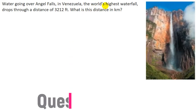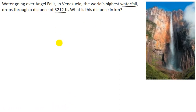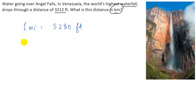In this question, they are saying that the world's highest waterfall drops through a distance of 3212 feet, and we have to find the distance in kilometers. You should know the conversion factors: one mile equals 5280 feet, and one mile also equals 1.609 kilometers. By using these conversion factors, we can easily convert this unit into kilometers.